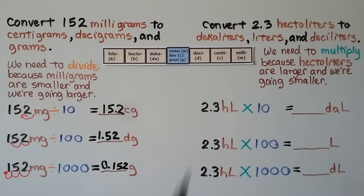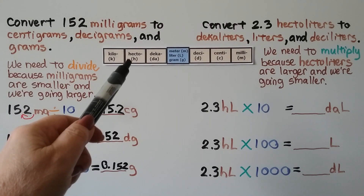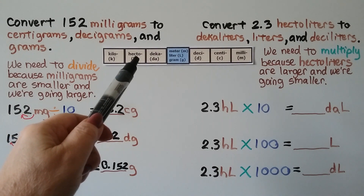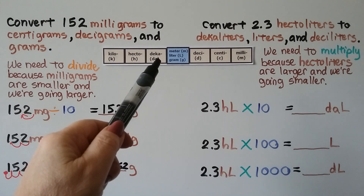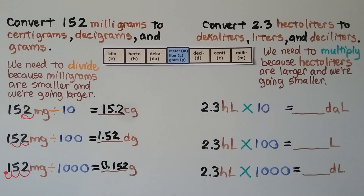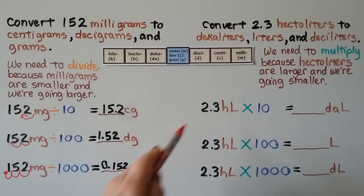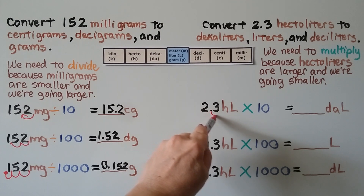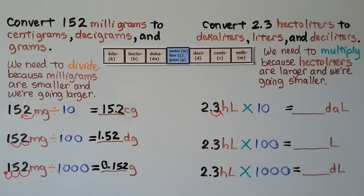To convert 2 and 3 tenths hectoliters to decaliters, liters, and deciliters, we need to multiply, because hectoliters are larger than decaliters, liters, and deciliters. 2 and 3 tenths hectoliters times 10 means our decimal point hops one place to the right, giving us 23 decaliters.